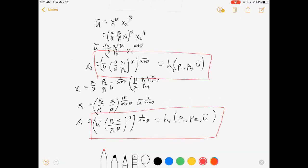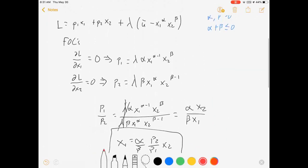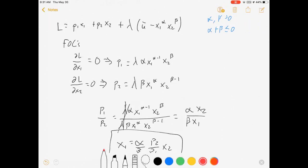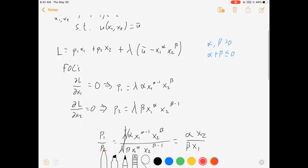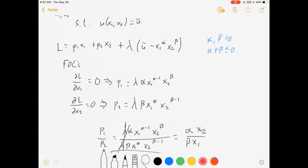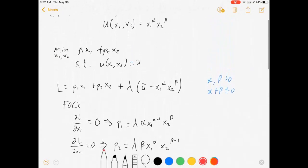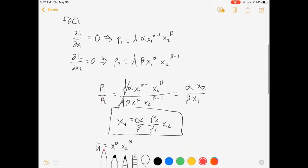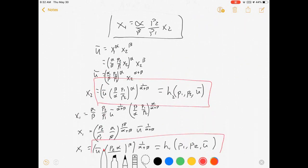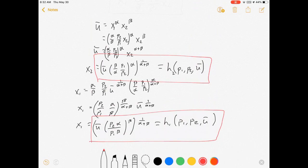That's pretty much all there is to the expenditure minimization problem. It was a pretty straightforward optimization process, minimizing prices times quantities subject to utility being greater than or equal to some level. With my functional form it was with utility being equal to that level. And we find that the higher the level of utility that needs to be maintained, the more we're going to demand, and then prices interact the way we would expect.